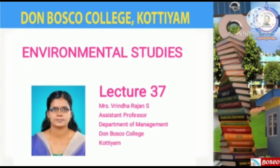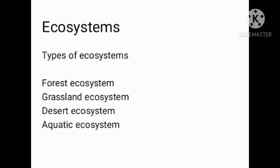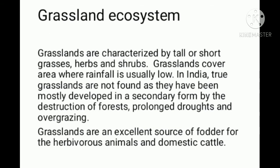Today we will be discussing the grassland ecosystem. We have already discussed the forest ecosystem; now we will discuss the grassland ecosystem. Grasslands are characterized by small grasses, herbs, and shrubs.